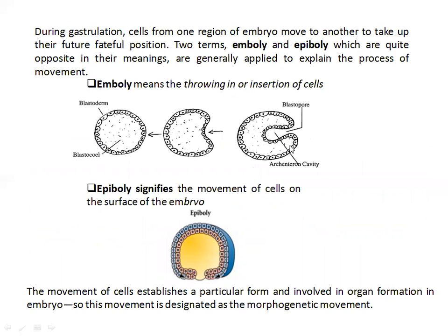There are invaginations. If you have a blastocoel, you can see a primitive gut forming. If you have an archenteron cavity, you can see surface movements. You can also see emboly and epiboly patterns.